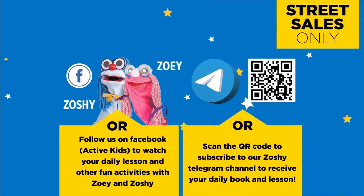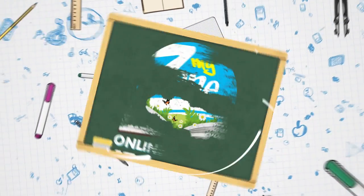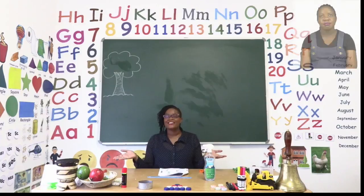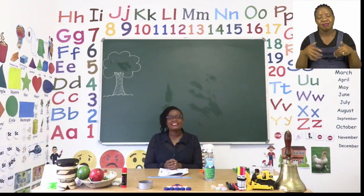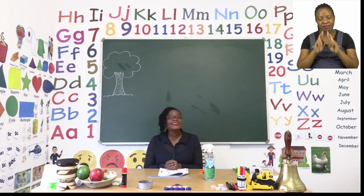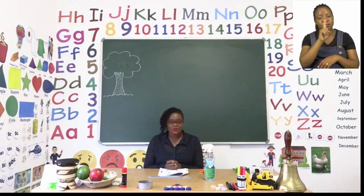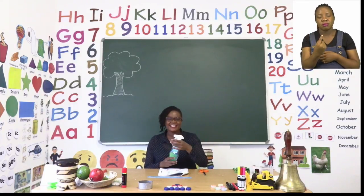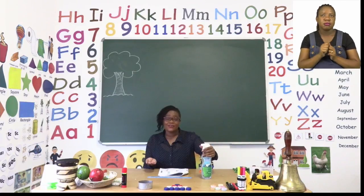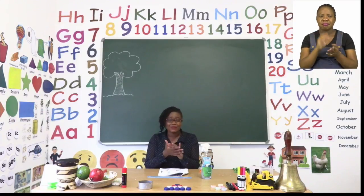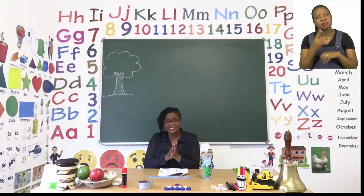Follow us on MyZone Facebook Active Kids to watch your daily lesson and other fun activities with Zoe and Zoshi. Boys and girls we have now come to the end of our lesson but I hope you had fun. Remember if you're not sure what to do it's okay to ask an adult for help, but make sure that you complete all your work by yourself. Now that we are done we need to sanitize. Remember sanitizing is very important because we're trying to get rid of all those nasty germs. Sanitize as regularly as possible and it's okay to ask the next person to sanitize as well.